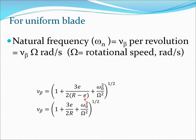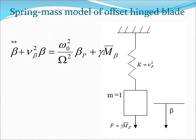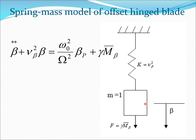When e is very small, the term 3e/(2(R minus e)) can be approximated as simply 3e/(2R), which is a good approximation in most cases. Comparing with a spring-mass system, the equivalent mass is one, the stiffness is nu_beta-squared, and beta is the flapping motion. The static load term from pre-cone is generally neglected in vibratory motion analysis, as it only causes a static deflection analogous to gravity.